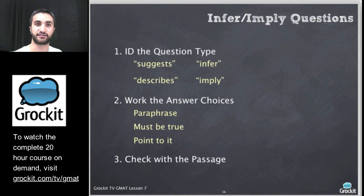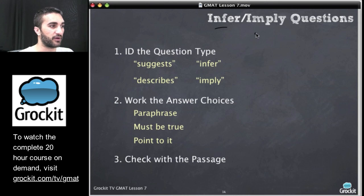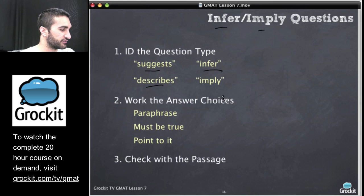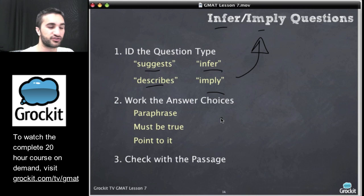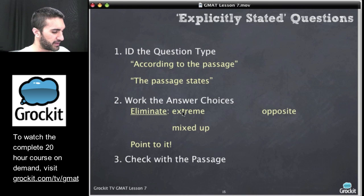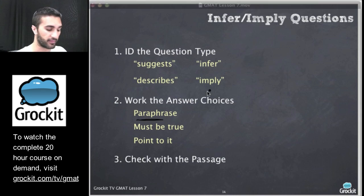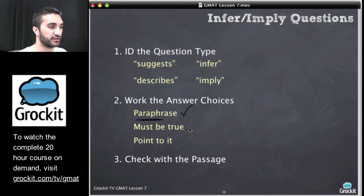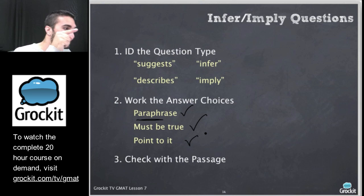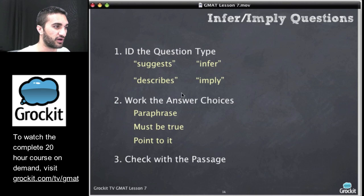Let's talk about how we identify and work with these question types. For IDing the question type on infer or imply questions — pretty straightforward. We see language like 'suggests,' 'the passage describes,' 'the passage is inferring,' or 'the passage implies.' When we see these words, we know we're dealing with an infer or imply question. For working these answer choices, we're looking essentially for a paraphrase — saying the same thing but in different words. That's the right answer. It basically must be true, and I should be able to do what I call the finger test, where I can point my finger to the part of the passage that has that answer.